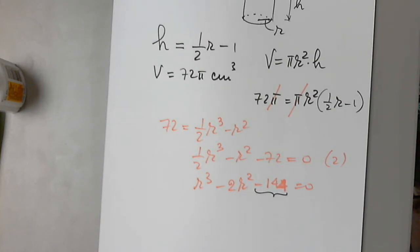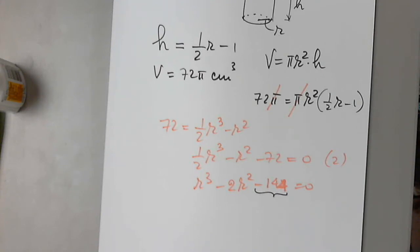Go to y equals, and enter r cubed — which is x cubed — then minus 2x squared, and then minus 144. Then we go to second and calc, and we want to determine the zeroes of this function, which is number two. I don't care for the negative zero; I'm interested in the radius that is positive. So I'm going to first graph it with zoom 6.